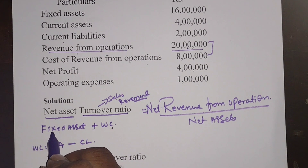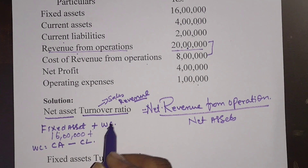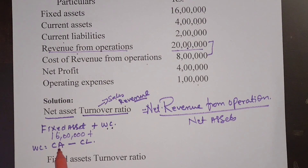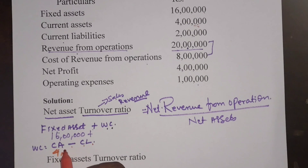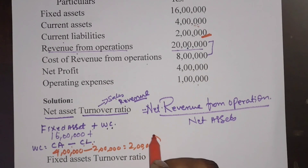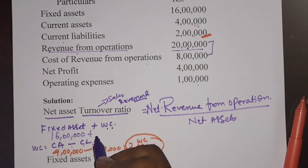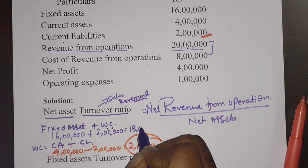The fixed assets given in the problem is 16 lakhs. Working capital is not given directly, so we calculate it: current assets minus current liabilities = 4 lakhs minus 2 lakhs = 2 lakhs. So working capital is 2 lakhs. Therefore, net assets = 16 lakhs plus 2 lakhs = 18 lakhs.